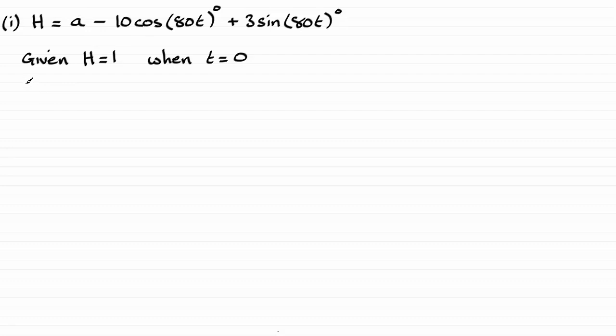So we know that h is one, so we therefore got that one must be equal to a. And we've got for t, zero being zero, the cosine of zero is one. So you're going to get minus 10 there.